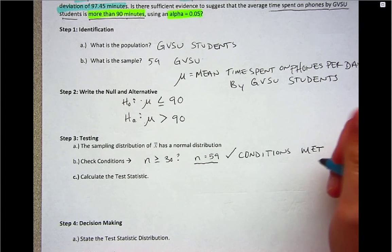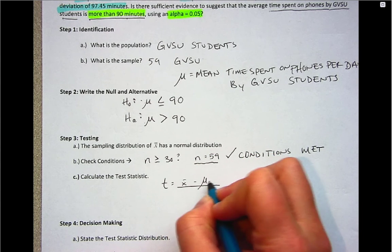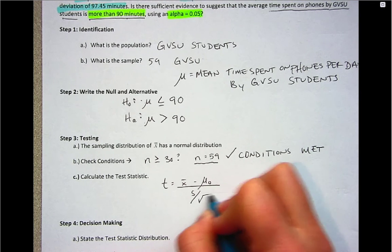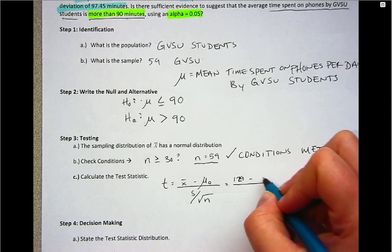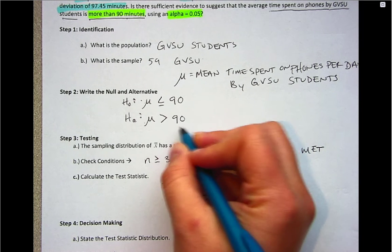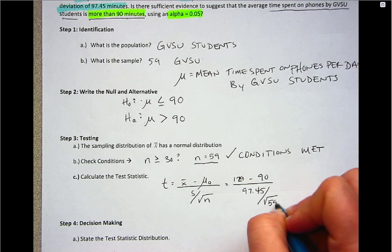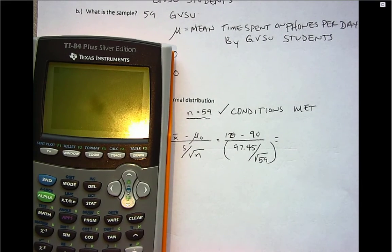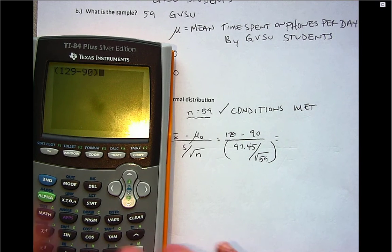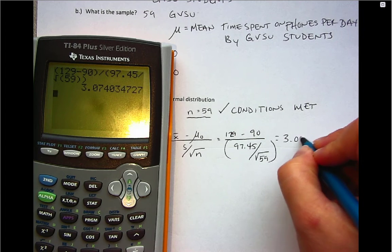So then we'll calculate our test statistic. And as a reminder, the formula is X bar minus mu naught divided by standard error. So our X bar was 129, and then we have a mu naught or null value of 90. And then we're dividing that by standard error. So to do that, we'll enter the numerator and put that in parentheses and then the denominator. And we come up with a test statistic of 3.07.